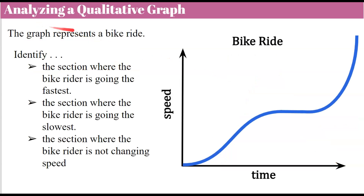Here we have another qualitative graph showing a bike ride and the relationship between time and the speed of the bike. We're asked to identify the section where the bike rider is going the fastest, the section where the bike rider is going the slowest, and the section where the bike rider is not changing speed. Go ahead and pause the video, identify those three sections, and then come back to check your work.